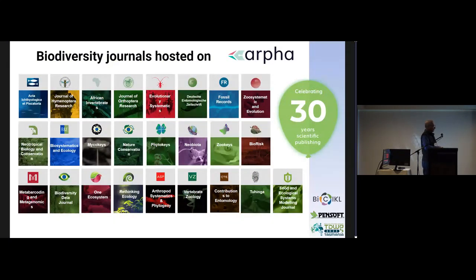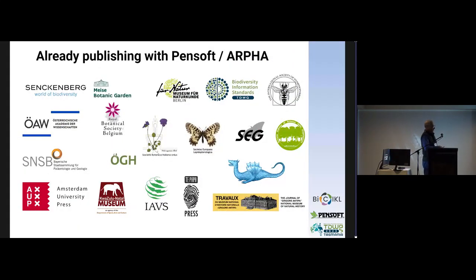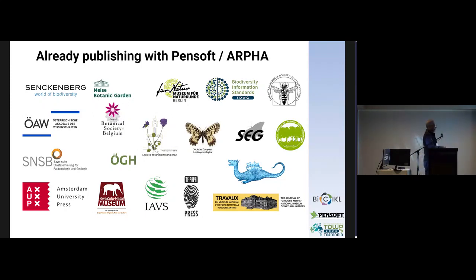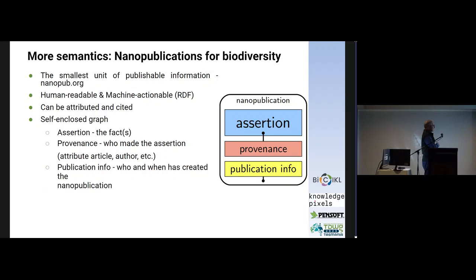Among the owners of those journals are not just Pensoft but also societies like Senckenberg in Germany, the Meise Botanical Garden, the Österreichische Akademie der Wissenschaften — the Austrian Academy of Sciences — and many other societies, especially in the field of natural history. That's about Pensoft. So what is a nanopublication?